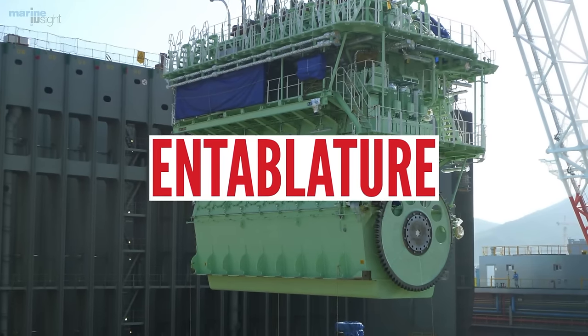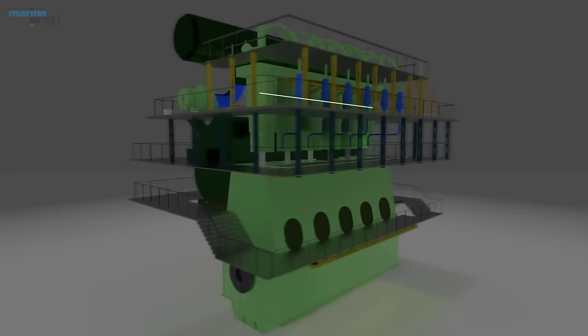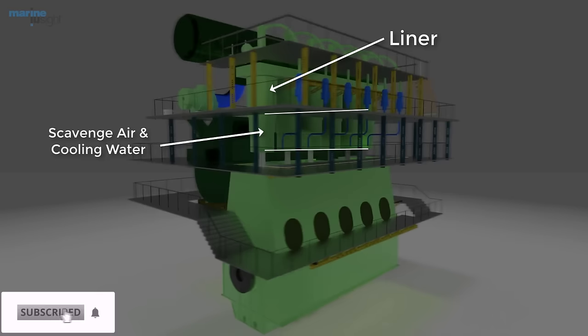Entablature: An entablature is a part of the ship's main engine which houses the cylinder liner along with the scavenged air space and cooling water spaces.